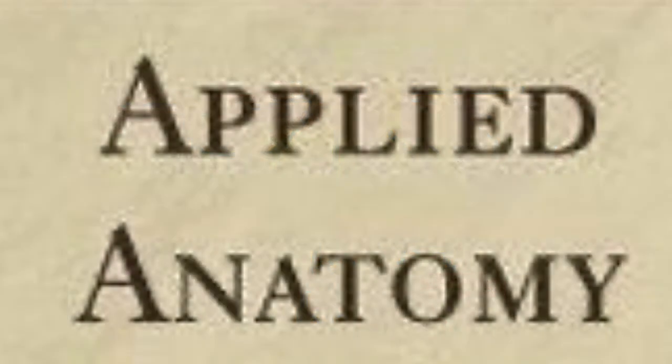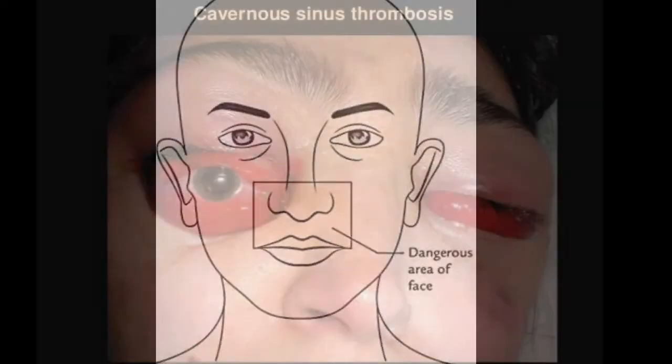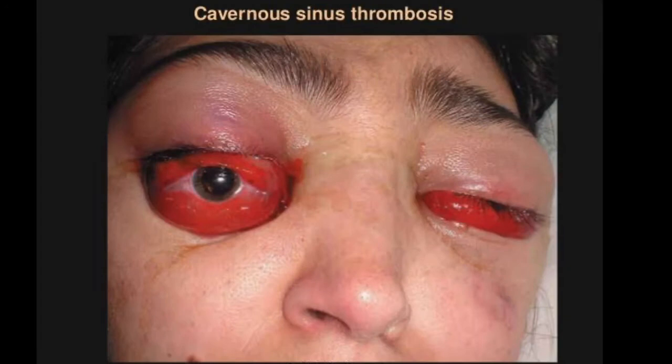Now the most important part — the applied anatomy of the cavernous sinus. Thrombosis of the cavernous sinus may be caused by sepsis in the dangerous area of the face, in nasal cavities, and in paranasal air sinuses. This gives rise to severe pain in the eye and forehead in the area of distribution of the ophthalmic nerve, and there is marked edema of the eyelids, cornea, and root of the nose, with exophthalmos due to congestion of orbital veins.